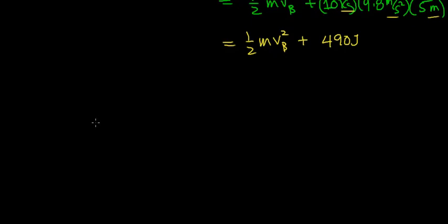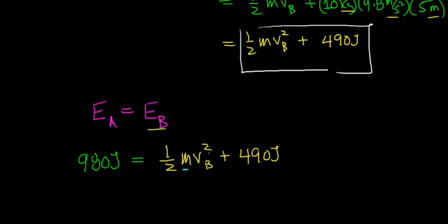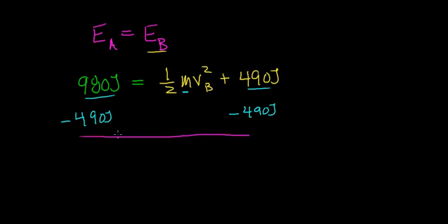Now I can utilize the conservation of mechanical energy, which says the total mechanical energy at point A must equal the total mechanical energy at point B. We calculated the total mechanical energy at point A to be 980 joules. Setting that equal to the energy at point B: 980 joules equals one-half the mass times the velocity of the rock at B squared, plus 490 joules. Subtracting 490 joules from both sides: 980 minus 490 equals 490 joules, and that equals one-half the mass times the velocity at point B squared.